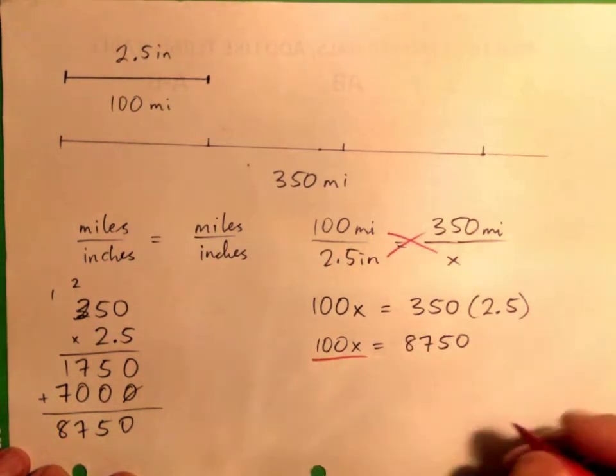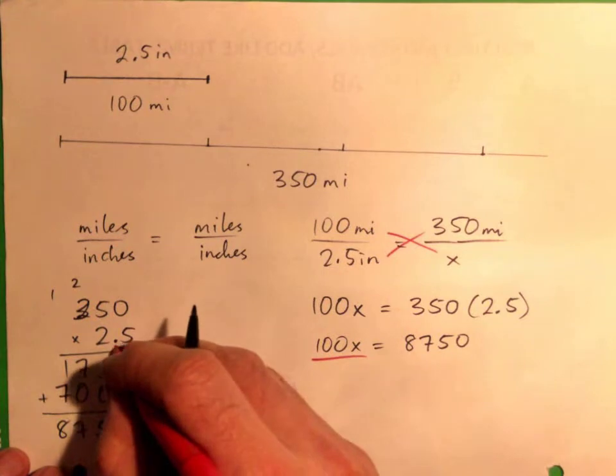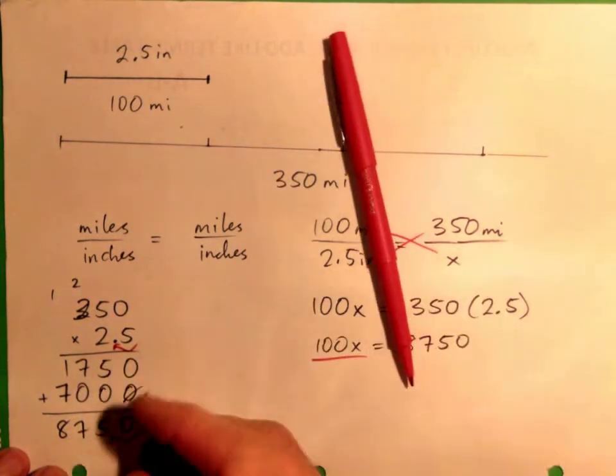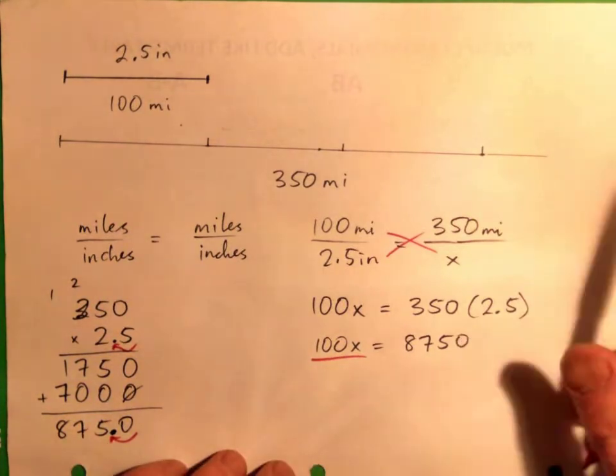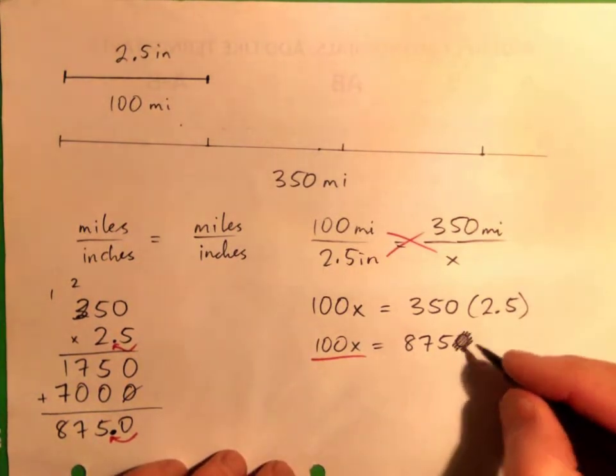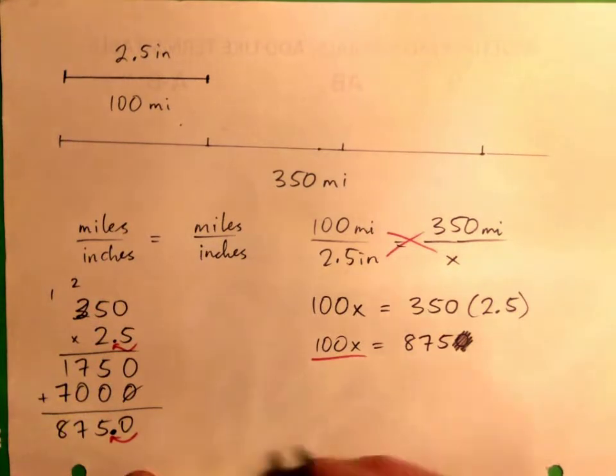So we have 100x equals 875.0. And then, oh, I forgot, didn't I? Yeah, decimal point in the question, so it must be a decimal point in the answer. So it's 875.0, or just 875. So 875, right?